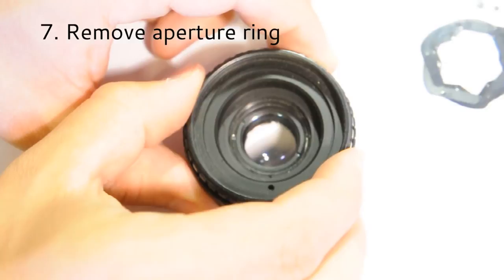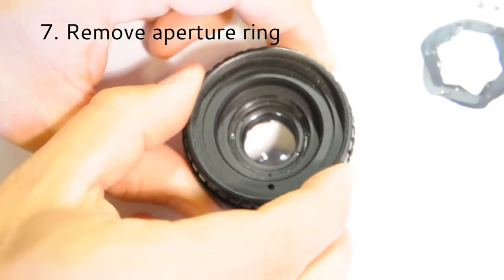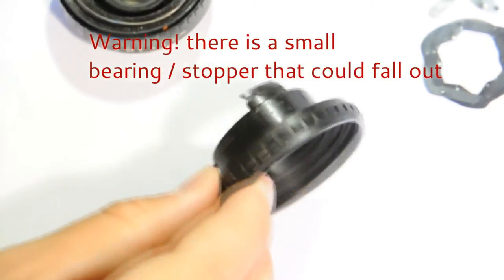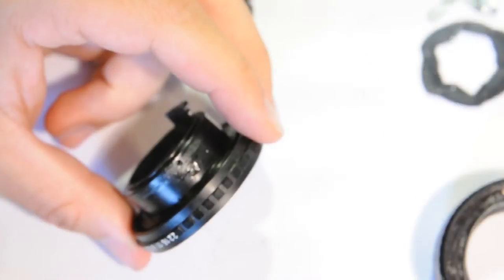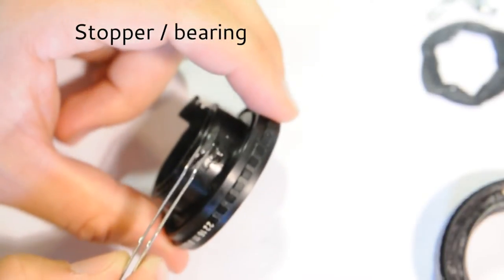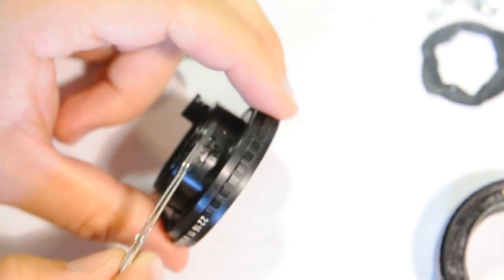We now can pull out the aperture ring. It pops out. It's a simple ring. There is a small bearing here which you should not lose.